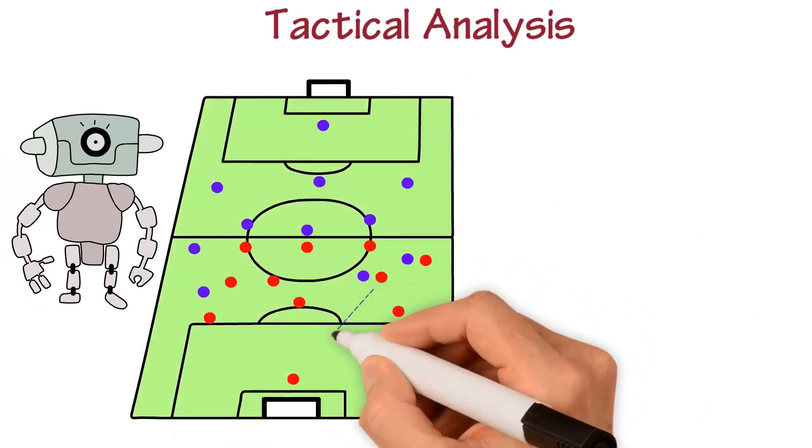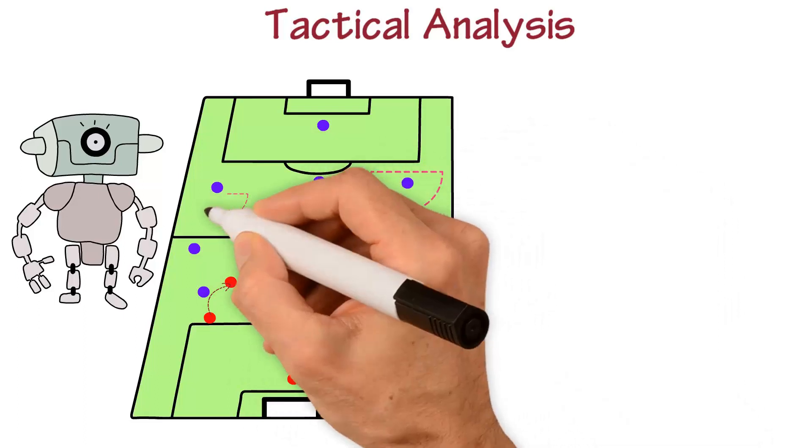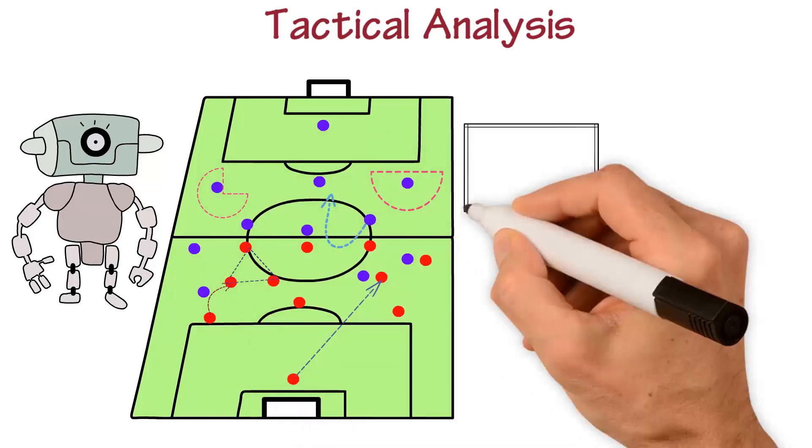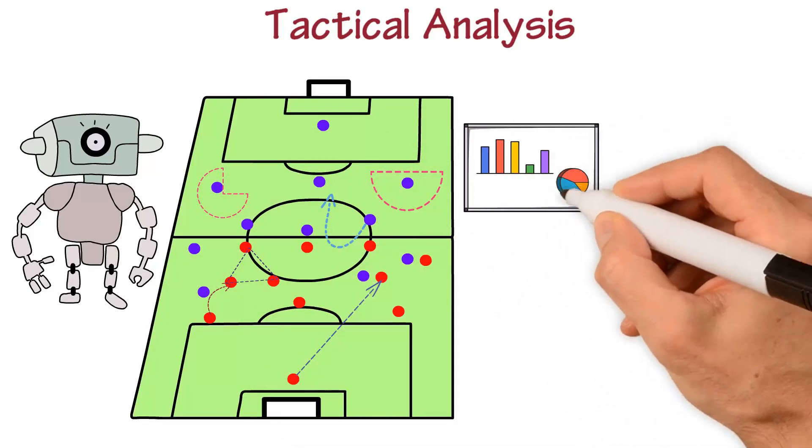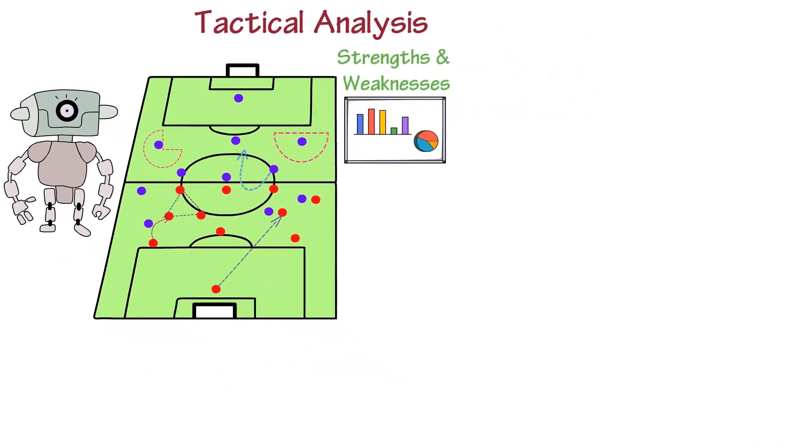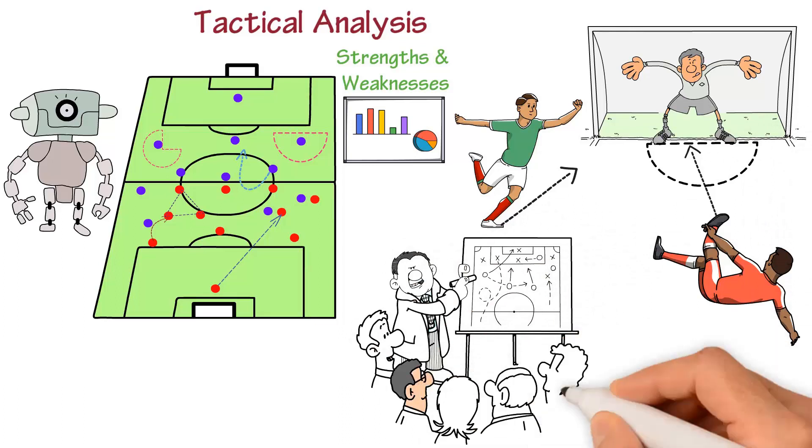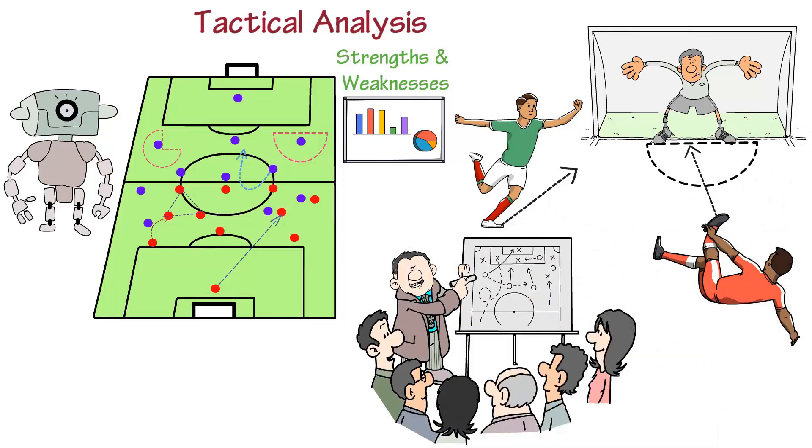Tactical analysis is also a crucial aspect of soccer, and AI algorithms are being utilized to deliver deeper insights into team performance. These algorithms analyze game data, identify trends and patterns, and provide real-time insights into team strengths and weaknesses. This information helps teams optimize their performance on the field by informing tactical decision-making and allowing coaches to make strategic decisions about player positioning and tactical approaches.